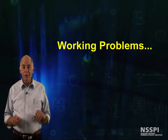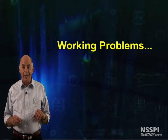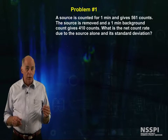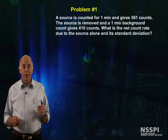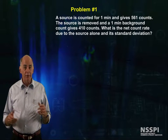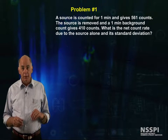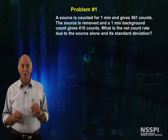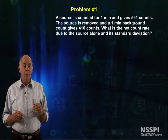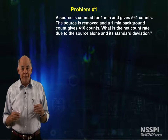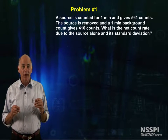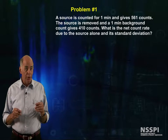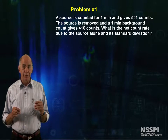Let's use these error propagation formulas to calculate things of interest to us. First problem: a source plus background is counted for one minute and gives 561 counts. This is also known as the gross counts. The source is removed and a one-minute background count gives 410 counts. What is the net count rate due to the source alone and its standard deviation?